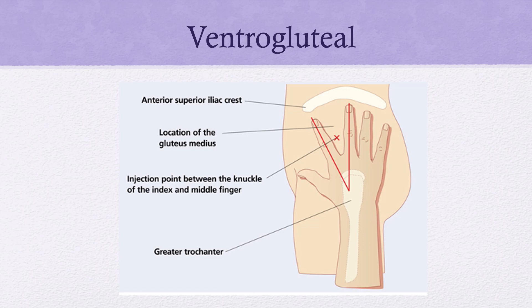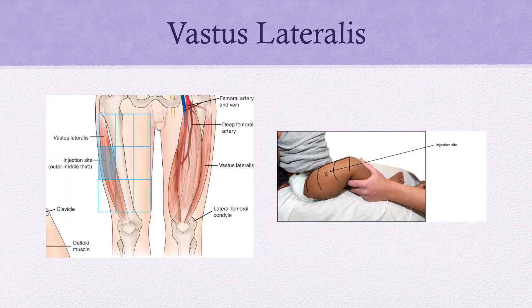The ventrogluteal is the preferred site for adults and adolescents for IM injections up to 3 mL — we'll look at this in lab to get the correct location. The vastus lateralis is the best and preferred site for patients less than one year of age, usually up to about seven months, and can really only handle about 1 mL of volume.